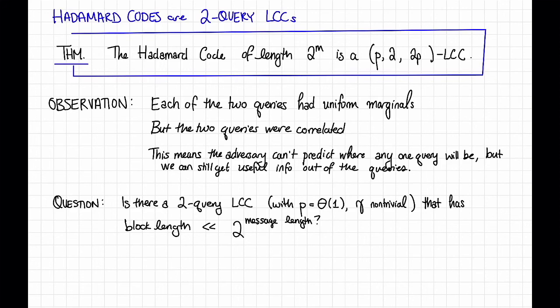We might ask, can we do better? That is, is there a two-query locally correctable code with parameter p that is some constant and failure probability γ that is non-trivial that does better than the Hadamard code in terms of rate? Namely, can we even get away with block length that's asymptotically less than two to the message length?